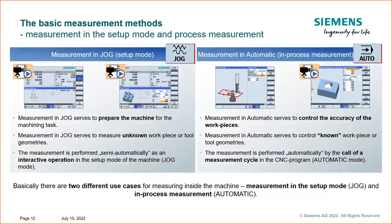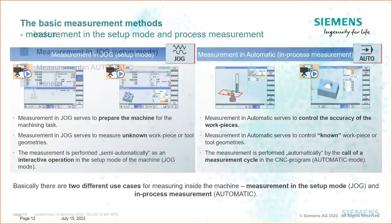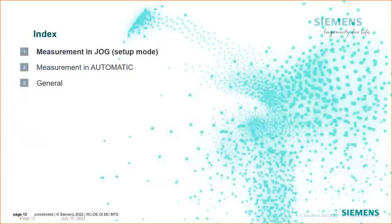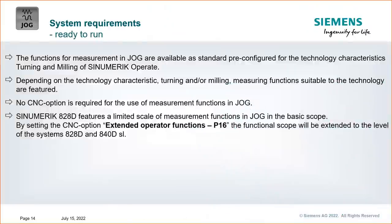We have two different types of probing cycles. We can measure and set work offsets in jog mode — like your first setup of a workpiece — or we can do it in automatic mode for in-process measurement and work offset updating. Our cycles are standard on the control; on the 828 you don't even need a probe — you can use an edge finder, end mill, or known diameter. Today we'll focus on using it with a touch probe.